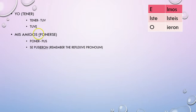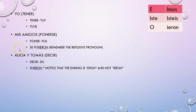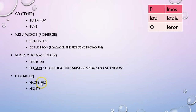For 'mis amigos ponerse,' PONER changes to PUS and then I add my appropriate ending: PUSIERON. Remember the reflexive pronoun. For Alicia y Tomás, DECIR changes to DIJ and then I add the appropriate ending. Remember that the verb DECIR is going to change to just -eron instead of -ieron in the ellos and ellas form.